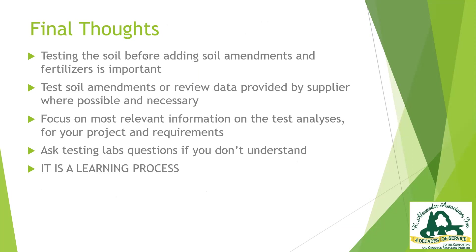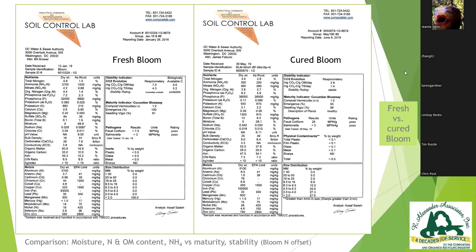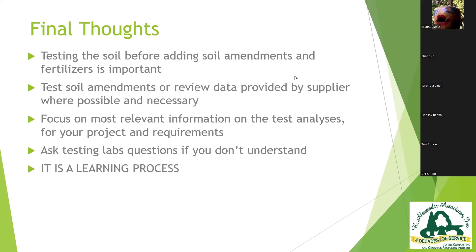Sebastian had another question: the land application of biosolids is typically limited by the plant available nitrogen in the feedstock and the plant uptake rate of the crop; in some cases it's limited by phosphorus. What's a typical approach for determining a recommended loading rate for soil amendments — is it nutrients, pounds of organic material per area, or does it vary? It varies to a degree. I was involved in biosolids research back in university, and it's been understood for more than 40 years that with many of these materials we know we're putting too much nitrogen down, but we have an understanding that the available nitrogen is not more than the plant's annual need.